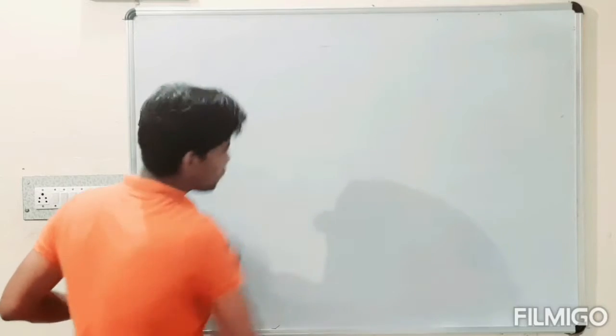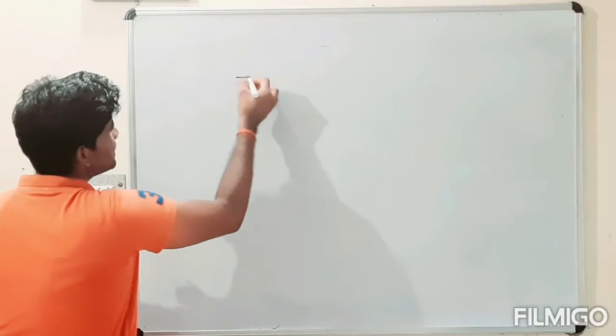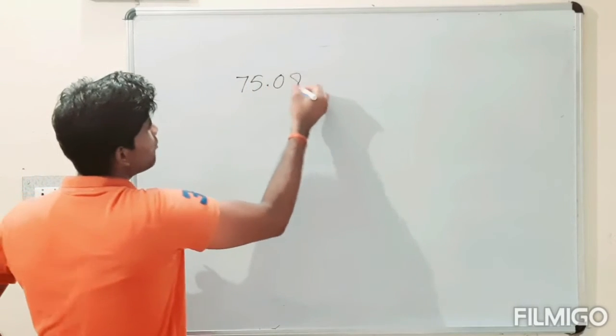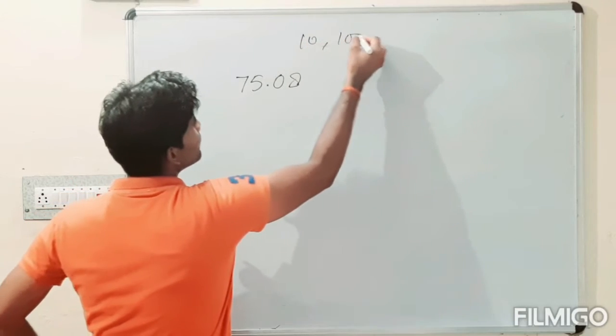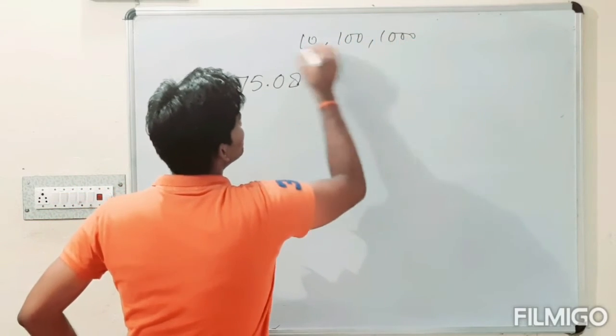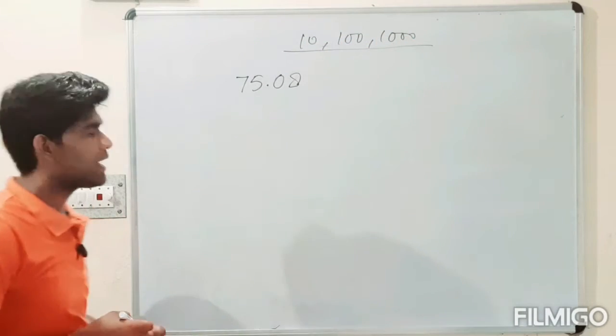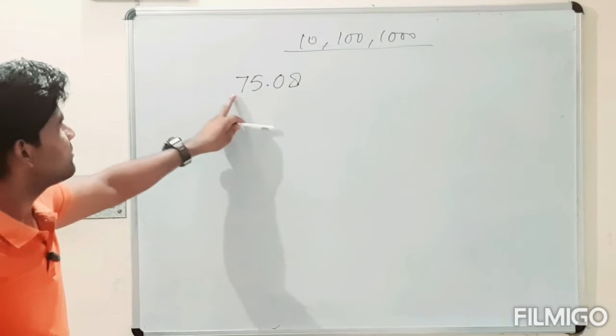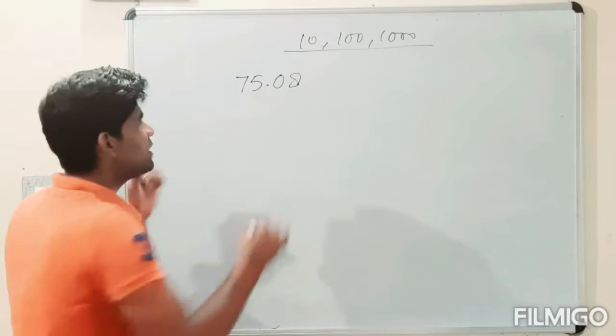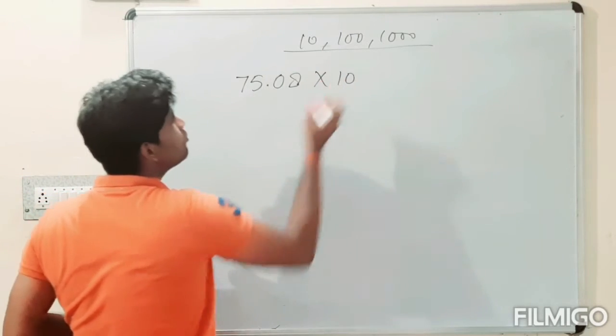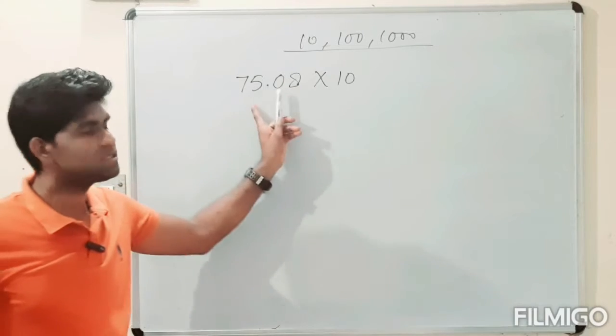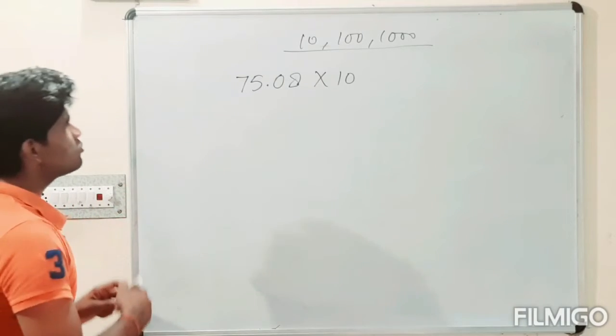Then simply, we have an example 75.08. Then how will you multiply it by 10, 100 and 1000 to any decimal number? So, let's have a look. We have an example 75.08. Then we need to first multiply it by 10. We need to multiply this decimal number by 10.